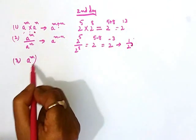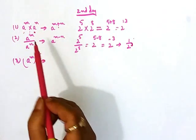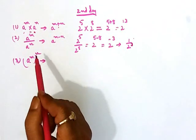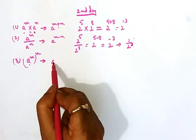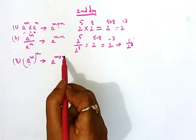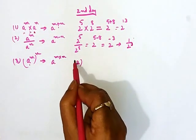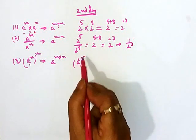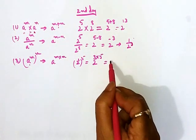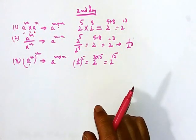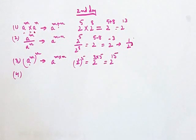Now let's come to the third rule. If a to the power m is then raised to the power n — here there is only one base — the result is a to the power m into n. For example, 2 to the power cube to the power 5 gives 2 to the power 3 into 5, which equals 2 to the power 15.